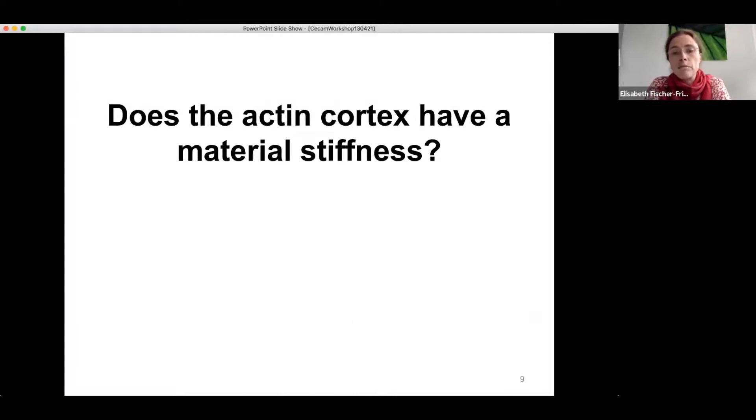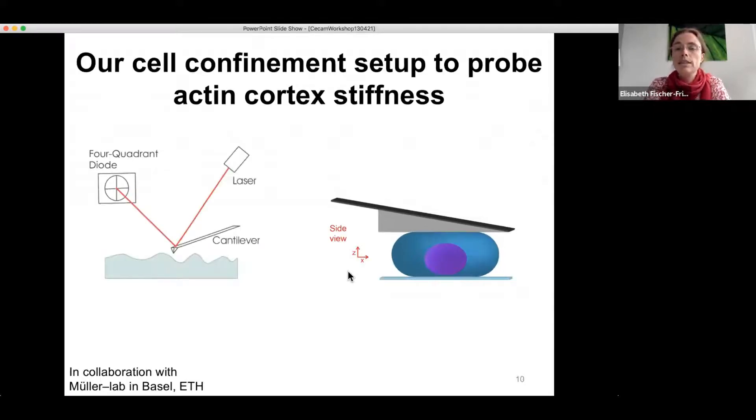So we can measure the material stiffness of the actin cortex with the setup. And the way we do that is we perform oscillatory squishing of the cell. And this allows us to actually probe actin cortex mechanics at a distinct timescale, because as you will see, the mechanics of the cortex actually is timescale dependent and therefore gives different values at different timescales. And therefore we probe it at a specific frequency, that means inverse of a particular timescale.